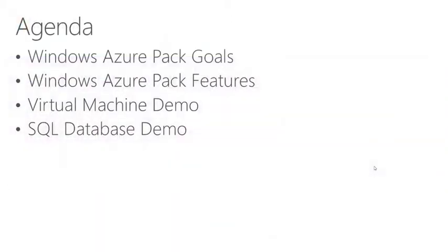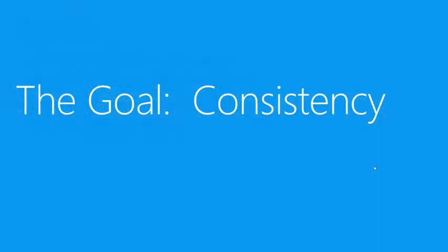Just a few things we want to go through today. Deploying our hybrid cloud is all about looking at the Windows Azure Pack. We're going to talk briefly about the goals of the Windows Azure Pack, look at the features available, and we'll do some demonstrations — first, the consistent experience between the public Windows Azure framework and the on-premises Windows Azure Pack for Windows Server, and then a demo on virtual machines and SQL databases as provisioned through the Windows Azure Pack for Windows Server.